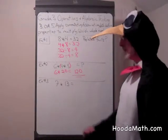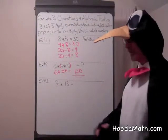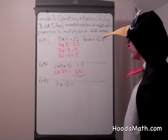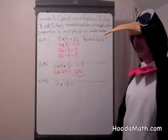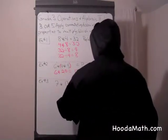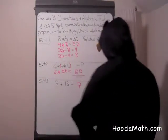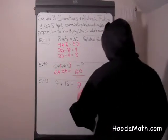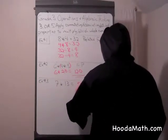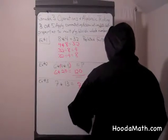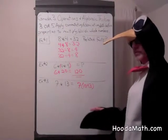There's another way to multiply using a different property. It might be hard for you to multiply 7 times 13 in your head. But you can multiply, using the distributive property, 7 times the quantity 10 plus 3. 10 plus 3 equals 13.